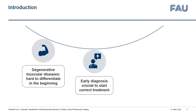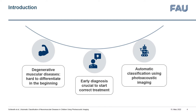Usually diagnosis is confirmed with genetic testing which takes up to several months. We propose an automatic imaging-based classification using photoacoustic imaging to support earlier diagnosis. Photoacoustic imaging is non-invasive, has low acquisition time, and provides functional information about the tissue.